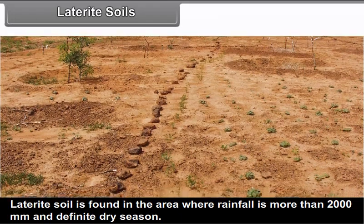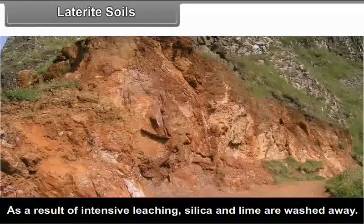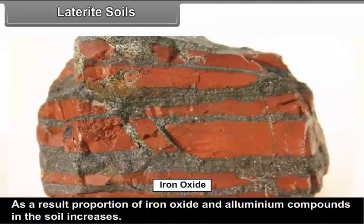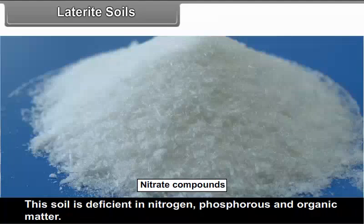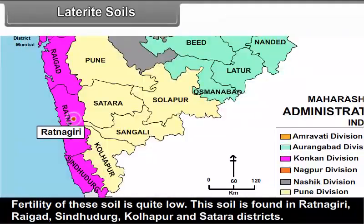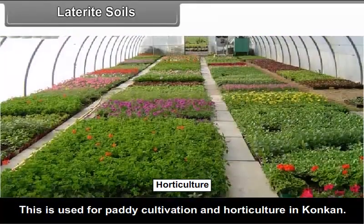In North Maharashtra, the basins of Tapi and Purna are full of deep alluvial deposits. Large areas in this basin are covered by alluvial soils. As alluvial soils are fertile, various crops can be cultivated. Laterite Soils: Laterite soil is found in areas where rainfall is more than 2000 mm with a definite dry season. As a result of intensive leaching, silica and lime are washed away, and the proportion of iron oxide and aluminum compounds in the soil increases. This soil is deficient in nitrogen, phosphorus and organic matter. Fertility of these soils is quite low. This soil is found in Ratnagiri, Raigad, Sindhudurg, Kolhapur and Satara districts, and is used for paddy cultivation and horticulture in Konkan.